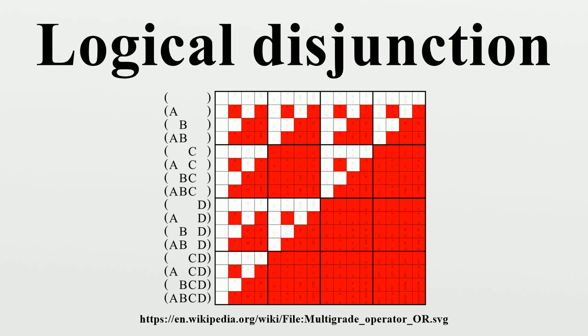Logical disjunction is an operation on two logical values, typically the values of two propositions, that has a value of false if and only if both of its operands are false. More generally, a disjunction is a logical formula that can have one or more literals separated only by ORs. A single literal is often considered to be a degenerate disjunction.